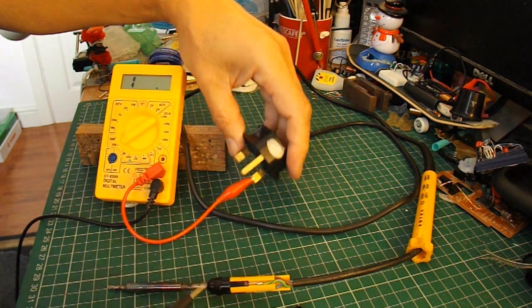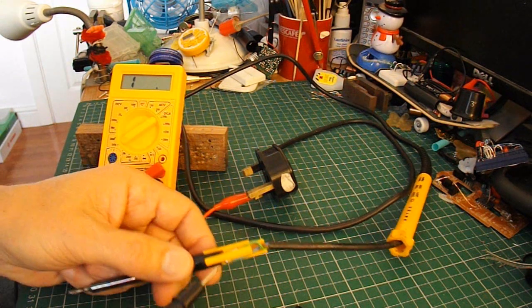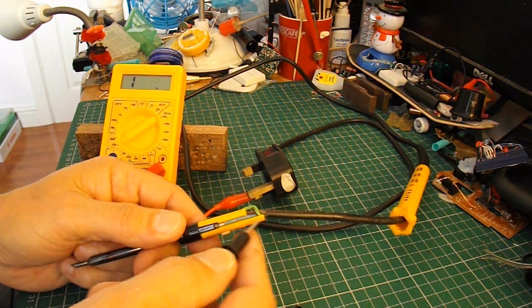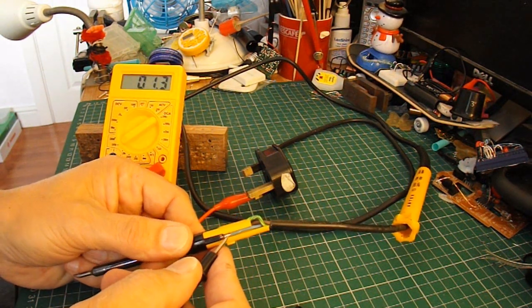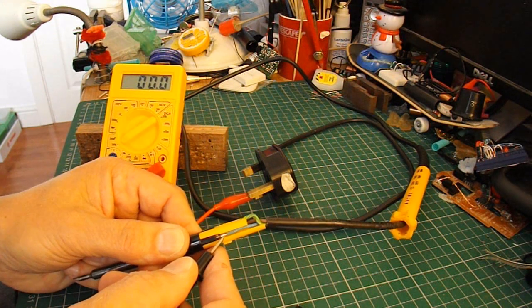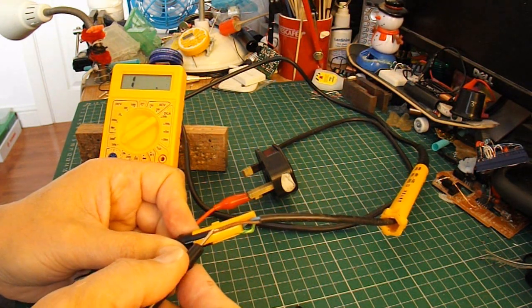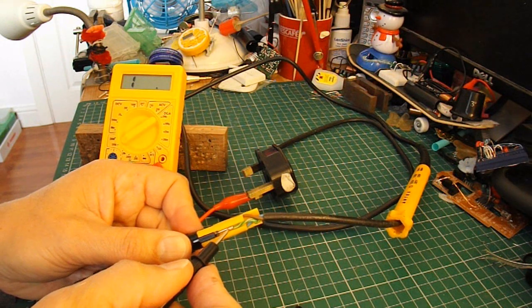So we know where the disconnection is. It's in the heater element. If we go on the other side, we're on the blue wire now. So there we go, full short circuit. Nothing over there. Nothing touching the earth.